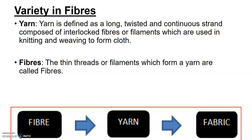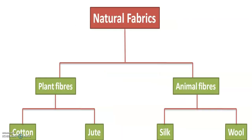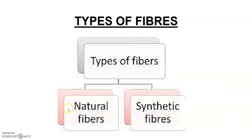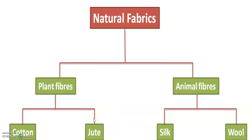In our syllabus, we have natural fibers. Fibers can be of two types: natural or synthetic. Synthetic fibers — such as polyester, nylon, and rayon — we will not study in class 6; we will study them in class 8. We will now focus on natural fibers, which fall into two categories: plant fibers and animal fibers. Under plant fibers we will study cotton and jute, while under animal fibers we have silk and wool, which will be studied in class 7.